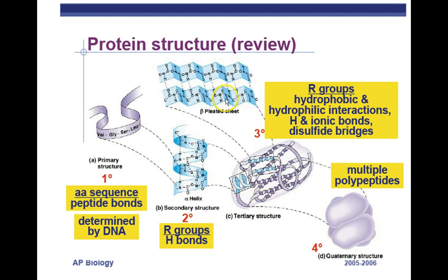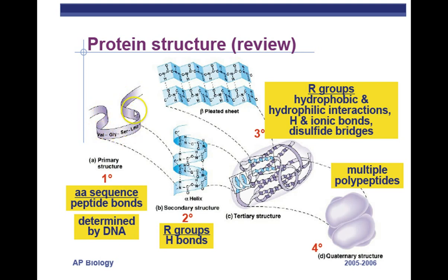This is a review of AP Biology material. The correct order of amino acids is called the primary sequence of a protein, and these are all held together by peptide bonds — covalent bonds. This is determined by DNA triplets, and that's what we're going to learn about today. Once we have the primary structure — the linking of amino acids together — the different R groups on the amino acids will form hydrogen bonds and create something called an alpha helix or beta pleated sheet.